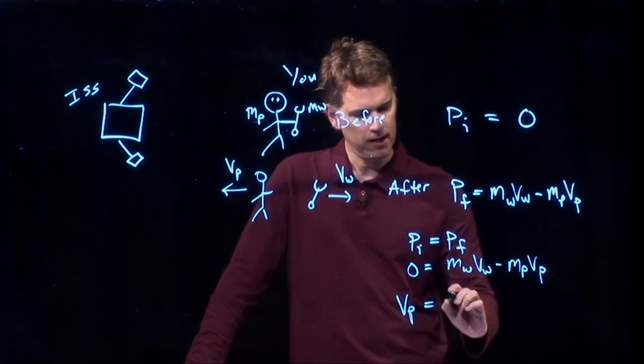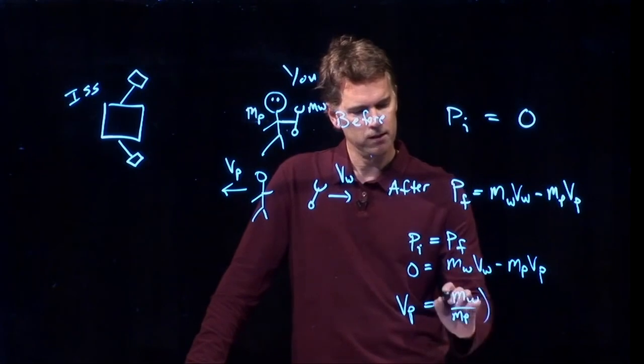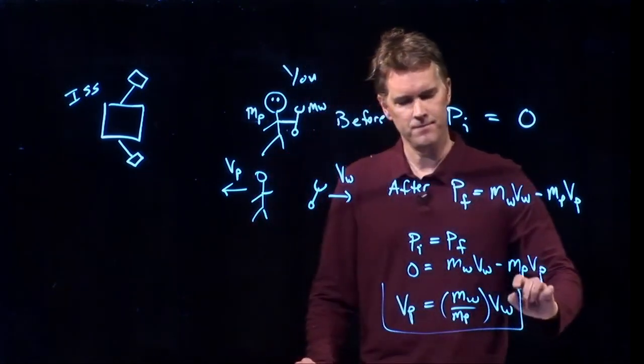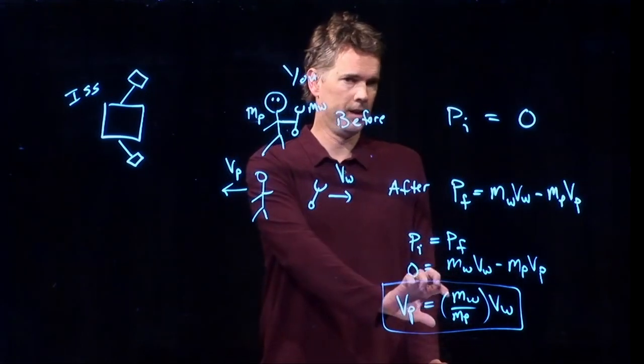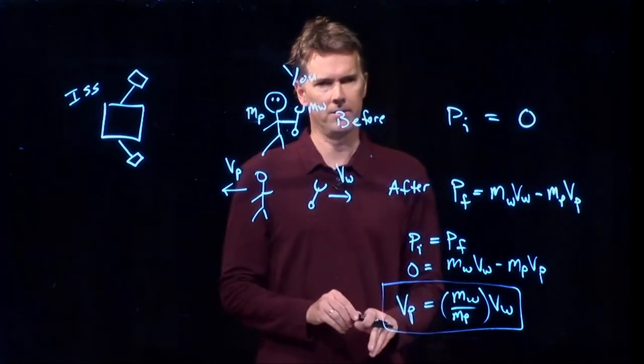All right, I'm going to move this over to the other side. I'm going to divide by m sub p. And I get that. Okay, this is the velocity of the person. This is how fast you will be moving after you throw the wrench.